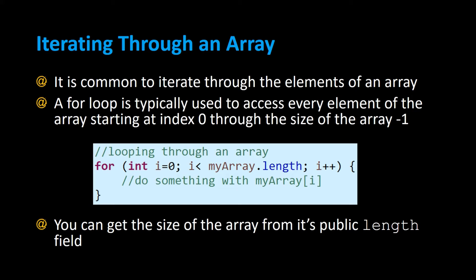In this video we're going to talk about iterating through an array. It's very common to iterate through the elements of an array, and a for loop is typically used to access every element starting from index 0 through the size of the array minus 1. Meaning if you had an array of size 10, the first index would be 0 and the last index would be 9.